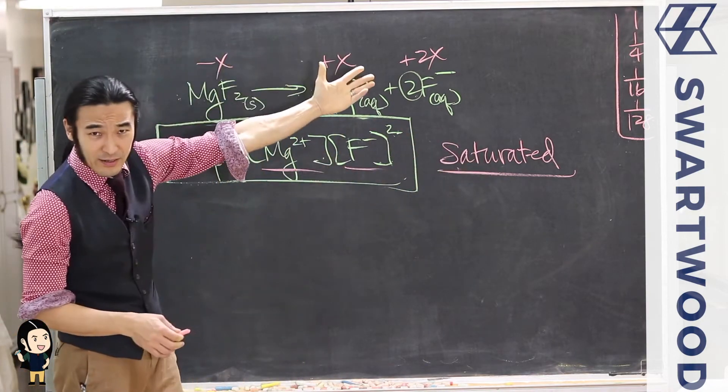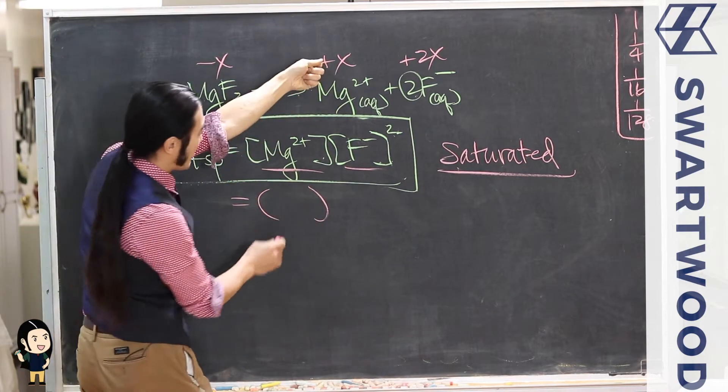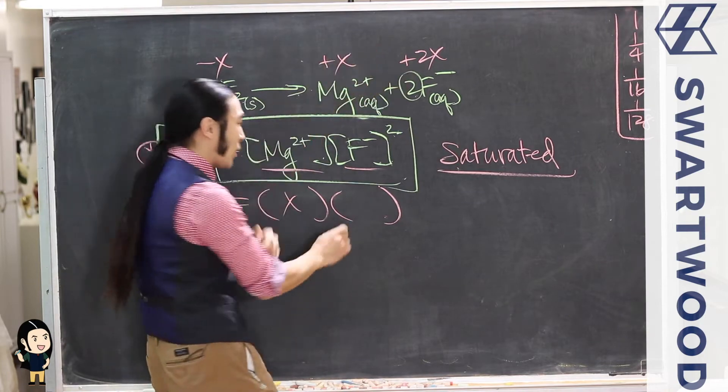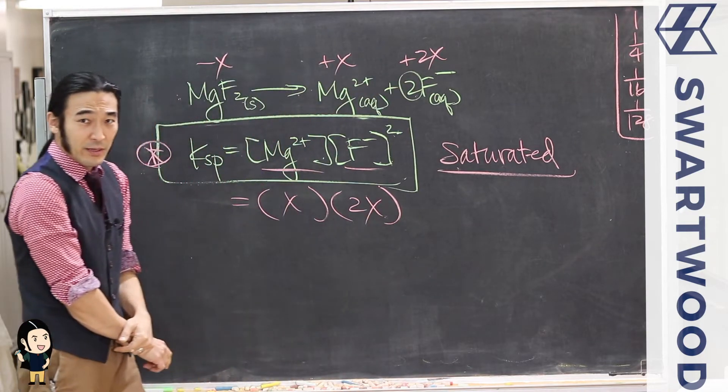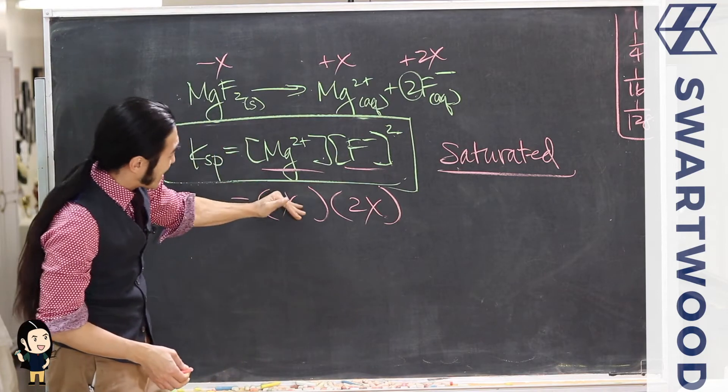Right, so now that KSP has meaning, but it only has meaning when you're saturated. So we're there, we're saturated, and so what do these concentrations look like? Well, the concentration of Mg²⁺ would be some amount, and the main thing to know is that F⁻ is going to be twice that amount.